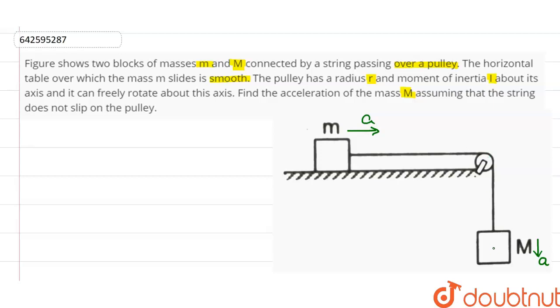And the forces applied on mass M are Mg, the gravitational force in the downward direction, and the tension force T1 in the string pulling upwards.